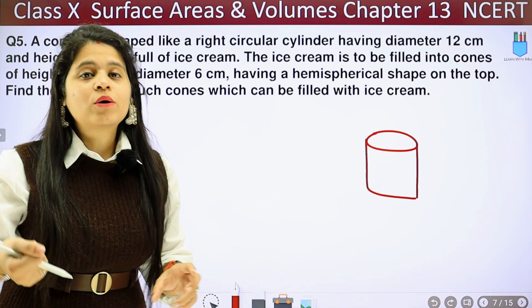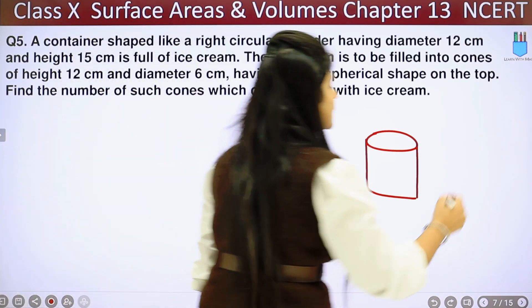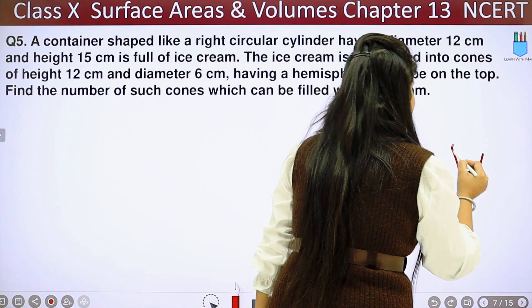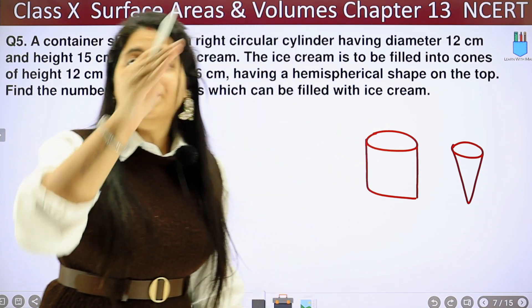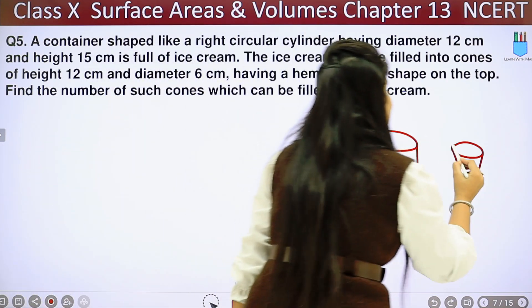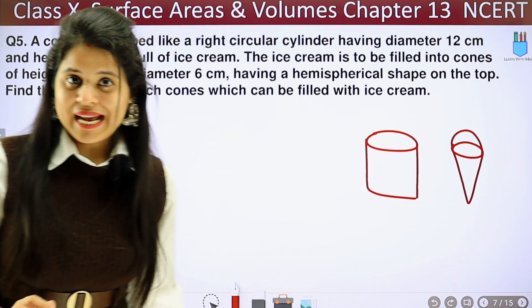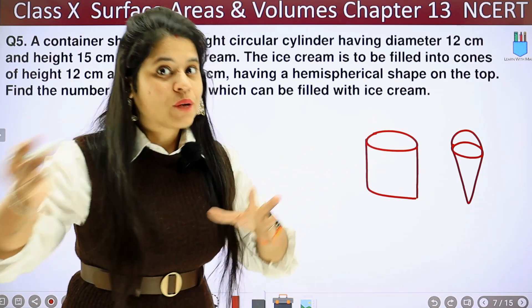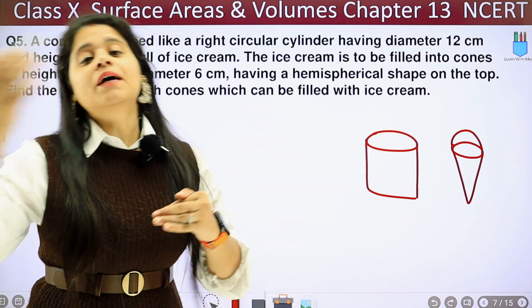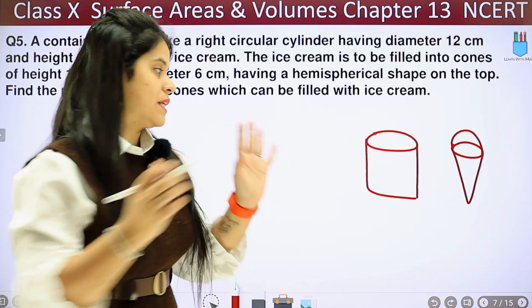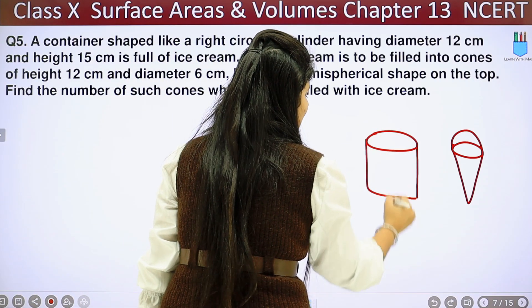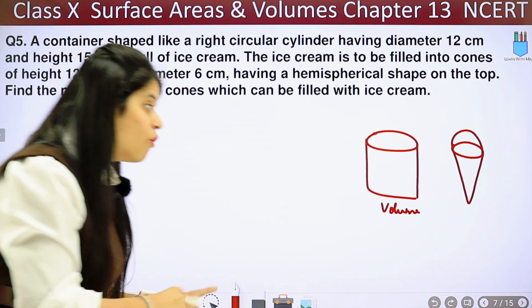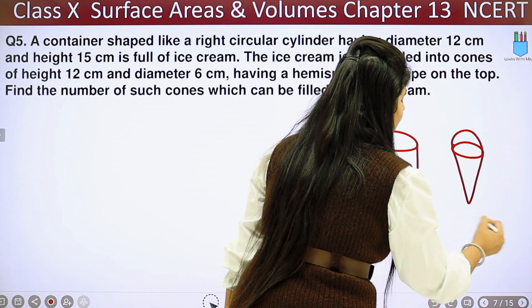Now what do we have to do? The ice cream is to be filled into cones of height 12 cm and diameter 6 cm having a hemispherical shape on the top. Find the number of such cones which can be filled with it. So this is our right circular cylinder or container in which the whole ice cream is filled. Now we have to scoop out this ice cream and make cones.